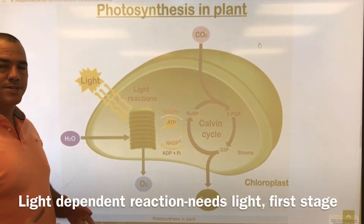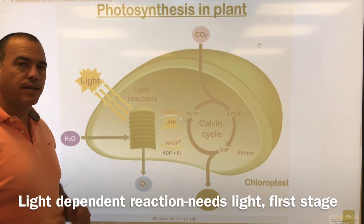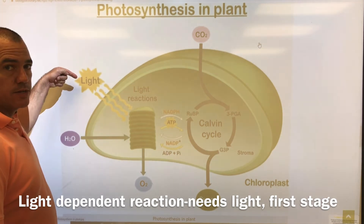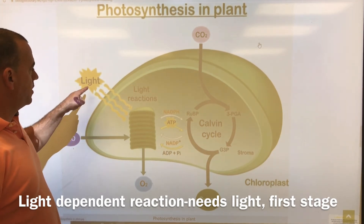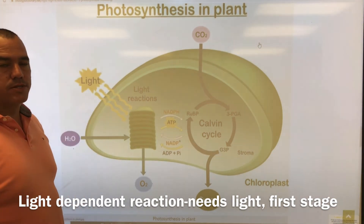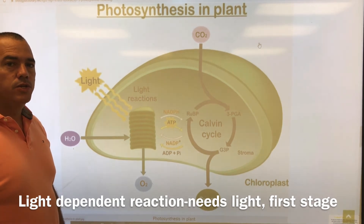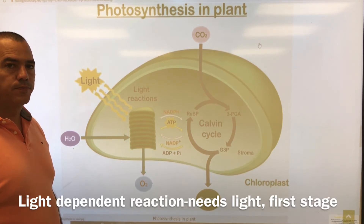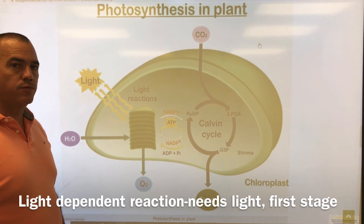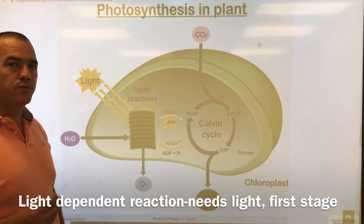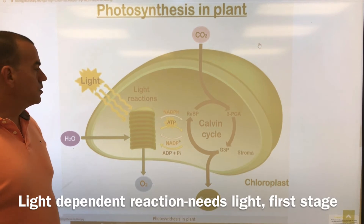The next word is the light-dependent reaction. This is the reaction where light comes in — light is entering the chloroplast. Write this down: the light-dependent reaction needs light to occur, and it is the first step in photosynthesis.